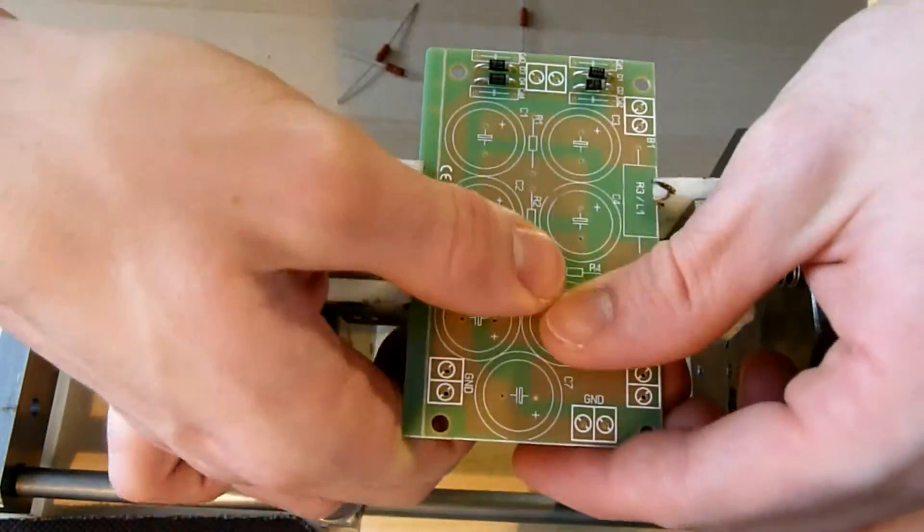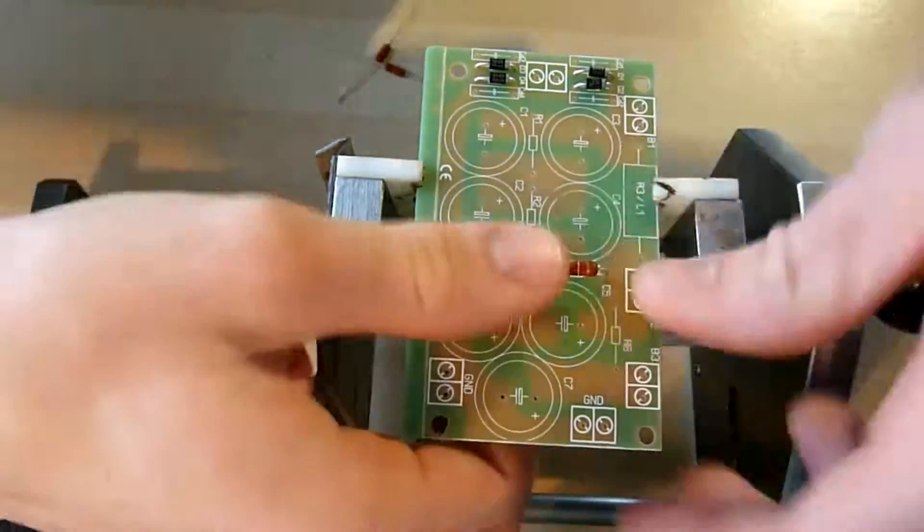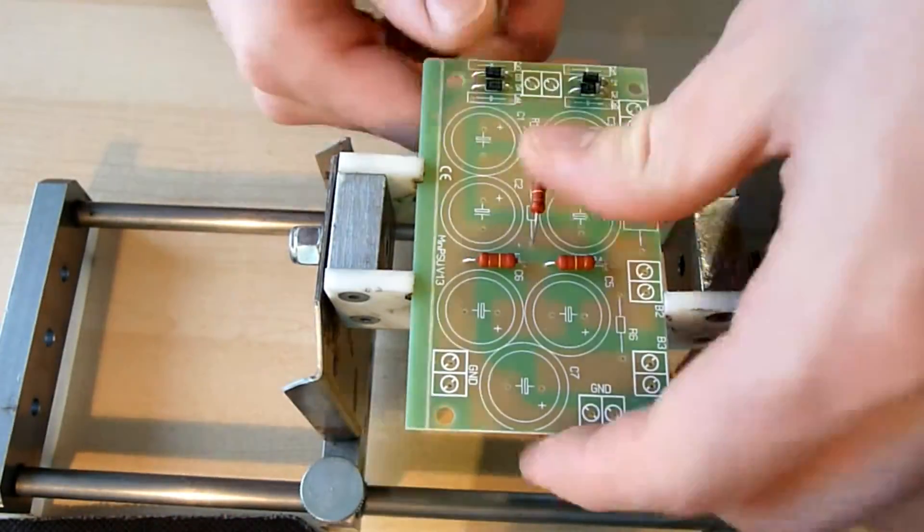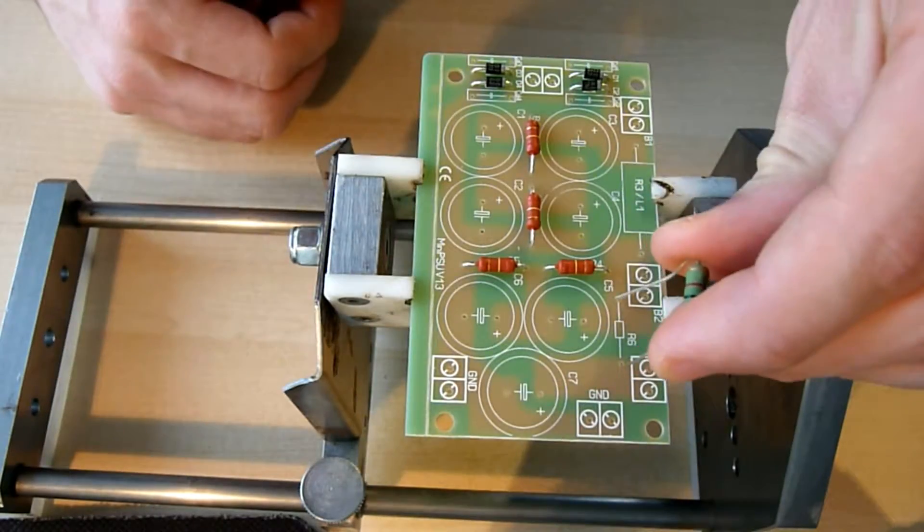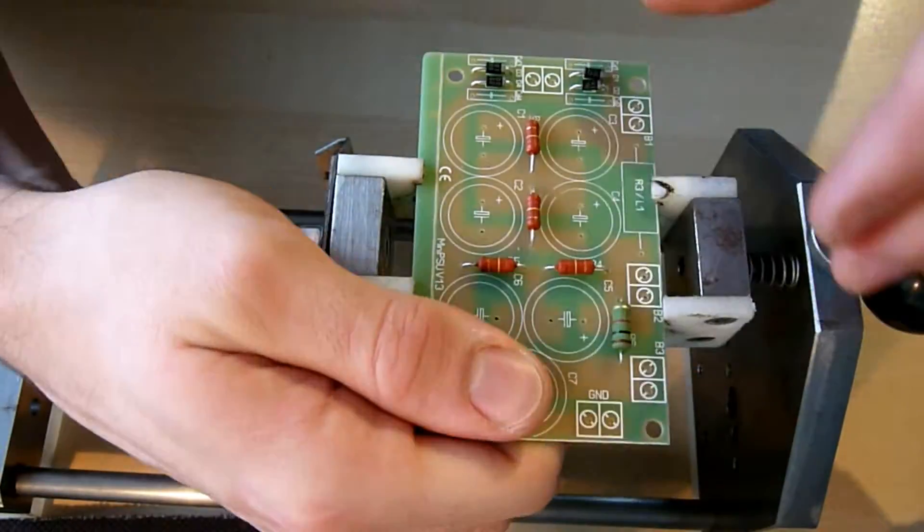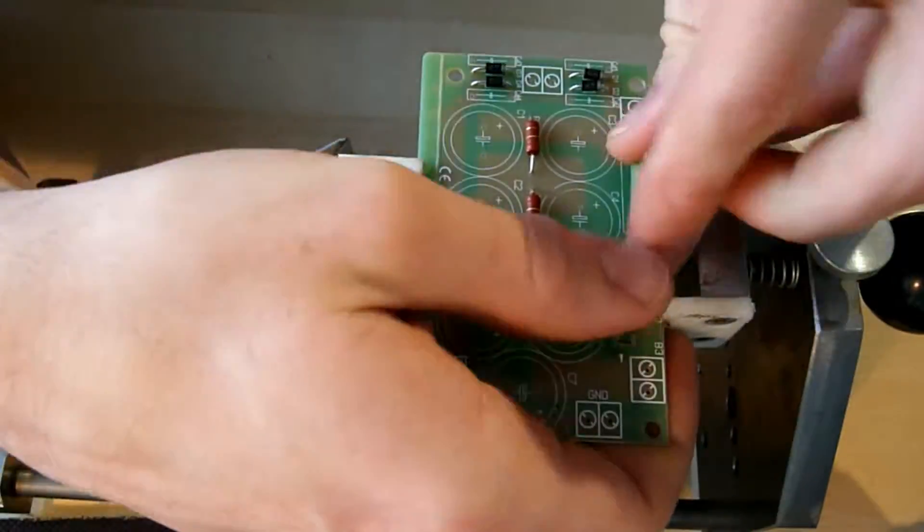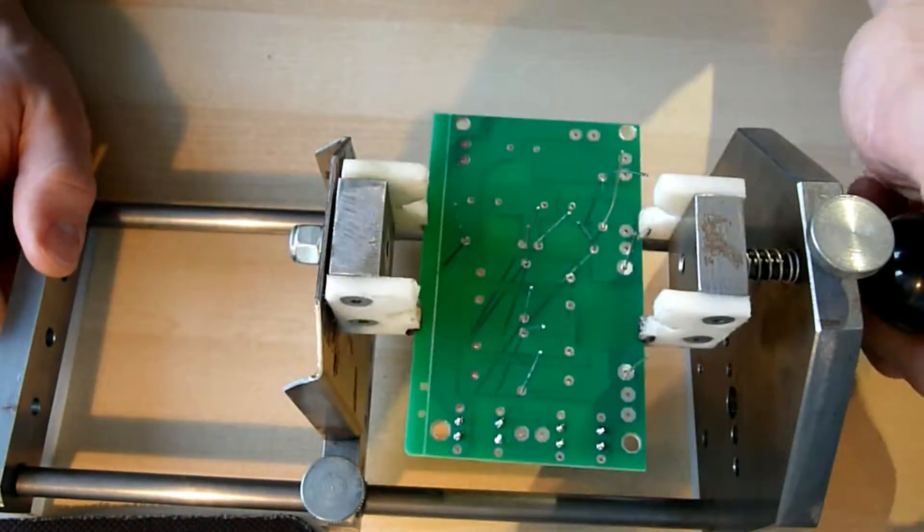Next we move on to the 6 resistors of our kit. The 4 red ones are 1, 2, 3 and 4 have 220 kilo ohms. The small green one R6 has 1 kilo ohm. And the big green one R3 has 470 ohm.